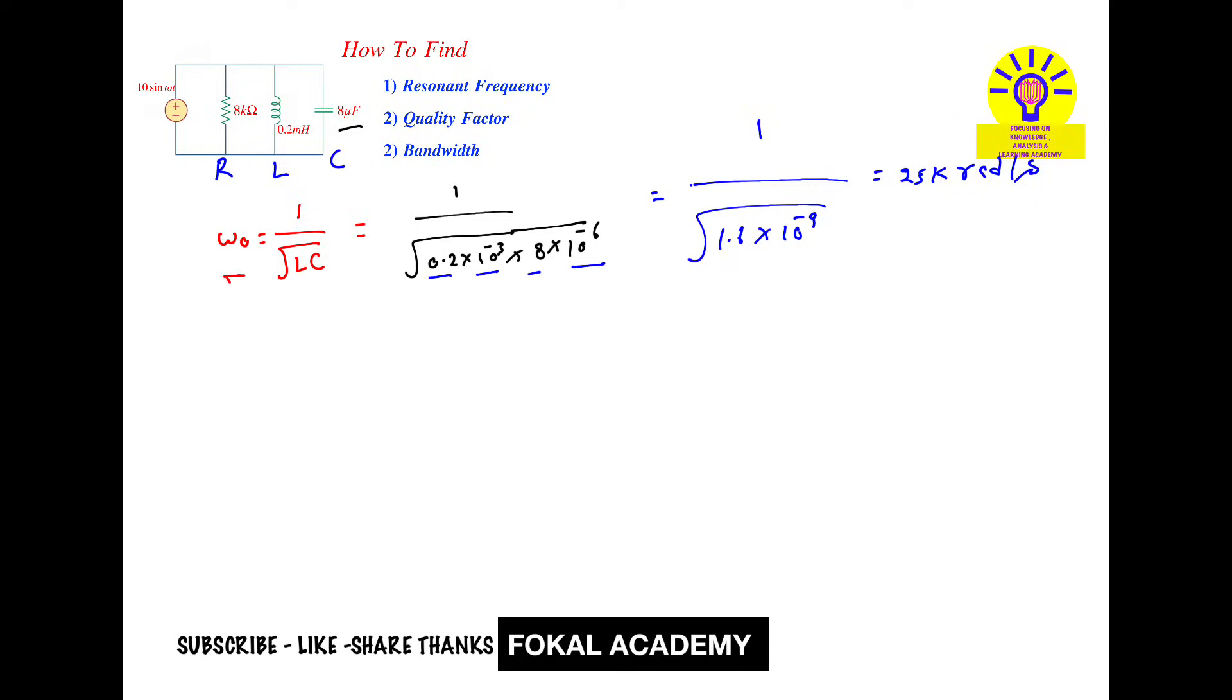So this is the resonant frequency, in angular units, that's why we show radians per second. Now we are going to find quality factor. Quality factor depends upon the resonant frequency. Quality factor Q equals R by omega naught times L. This is the formula for finding quality factor.